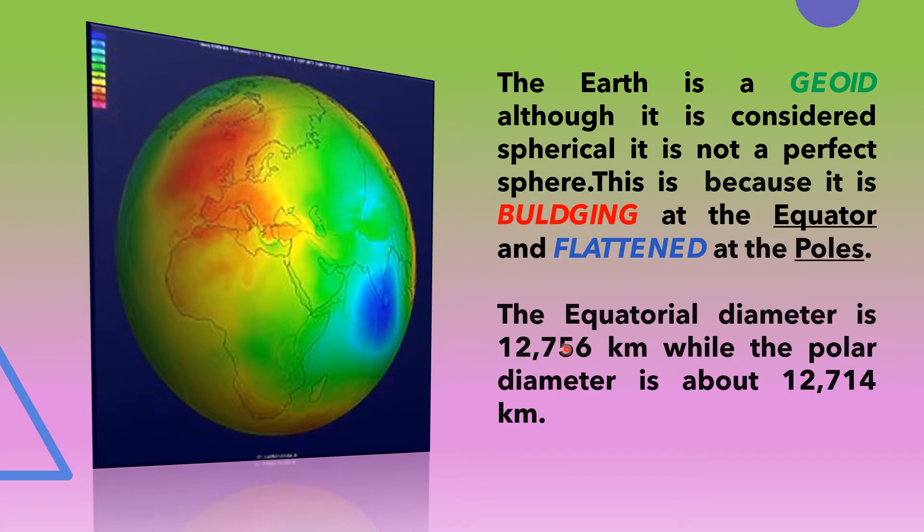If we measure the equatorial diameter, it is about 12,756 km, while the polar diameter is 12,714 km.